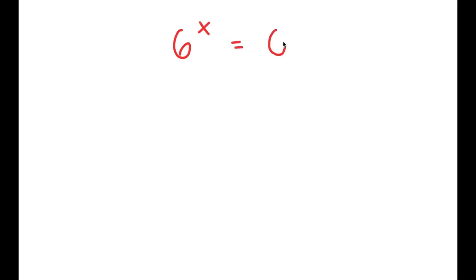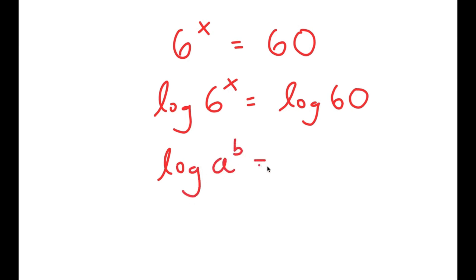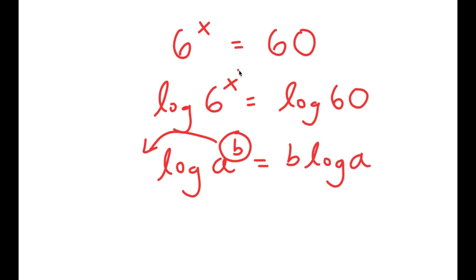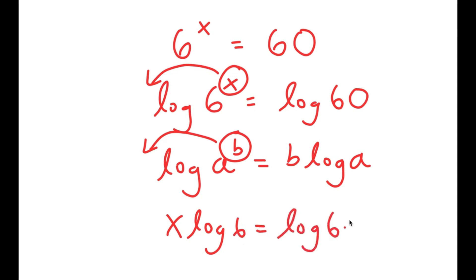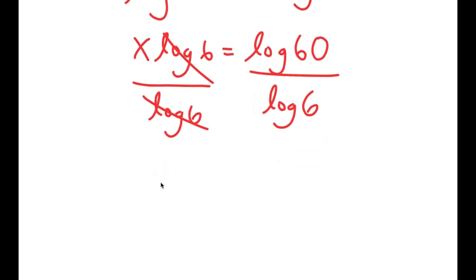In this video I'm going to be solving the equation 6 to the power of x is equal to 60. To solve this, I'm first going to take the log on both sides. So I get log of 6 to the power of x is equal to log 60. Using the log power rule, I can move x to the front, so I get x times log 6 is equal to log 60. Dividing both sides by log 6, these cancel out and I get x is equal to log 60 over log 6.